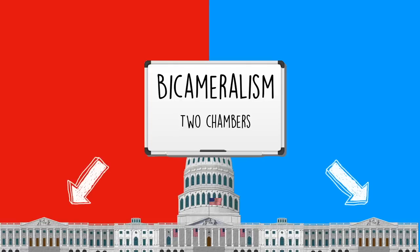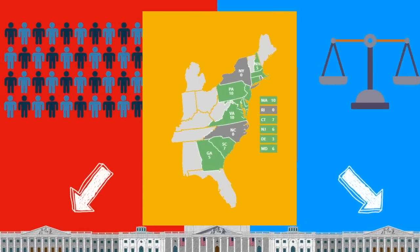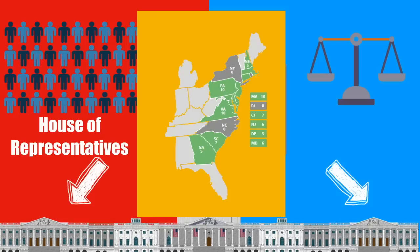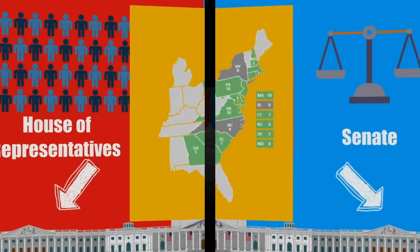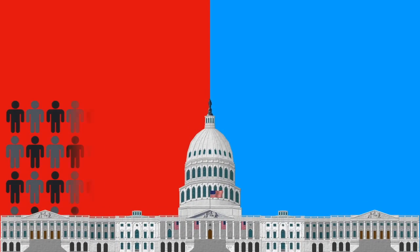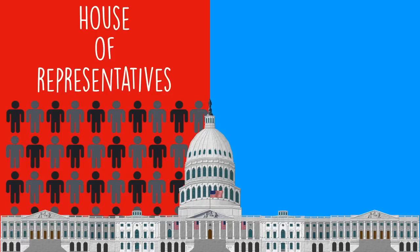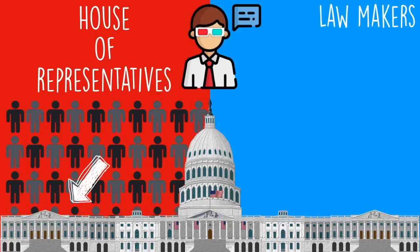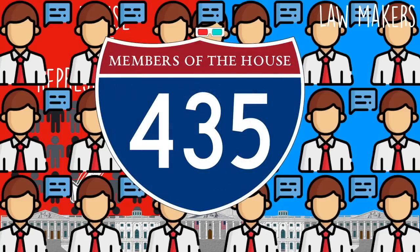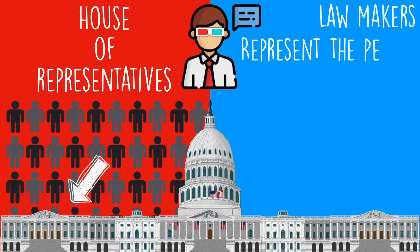One chamber of these lawmakers is based on the population of each state, and we call that the House of Representatives. The other chamber is based on equal votes — no matter how many people you have in your state — and we call this chamber the Senate. The House of Representatives is made up of lawmakers, and there are 435 of them. They represent the people, which means depending on how much population you have in your state, that's how many lawmakers in the House you're going to get.